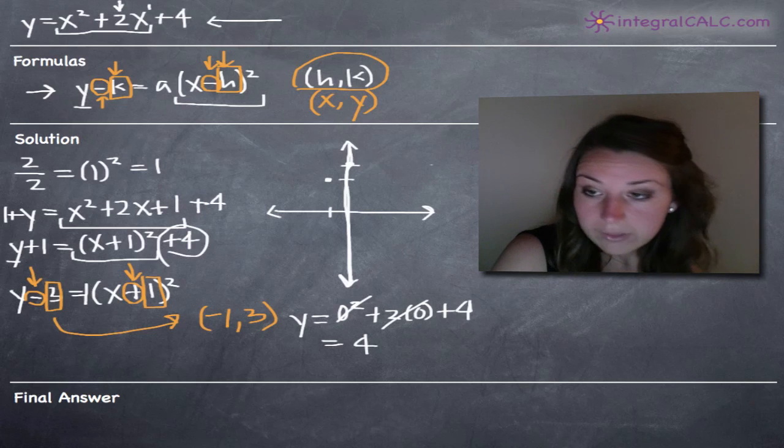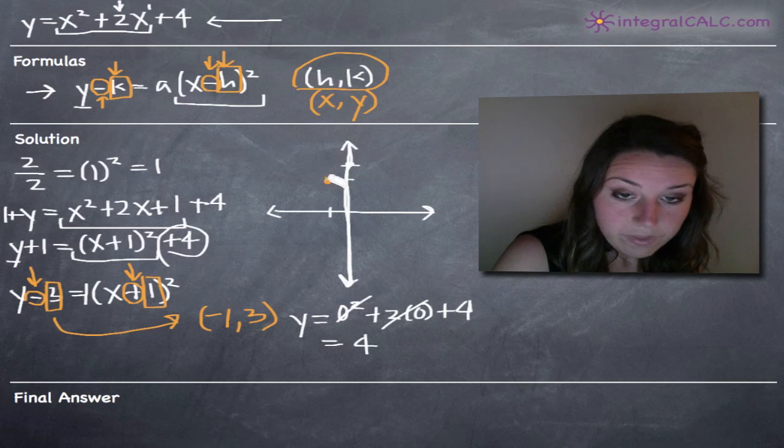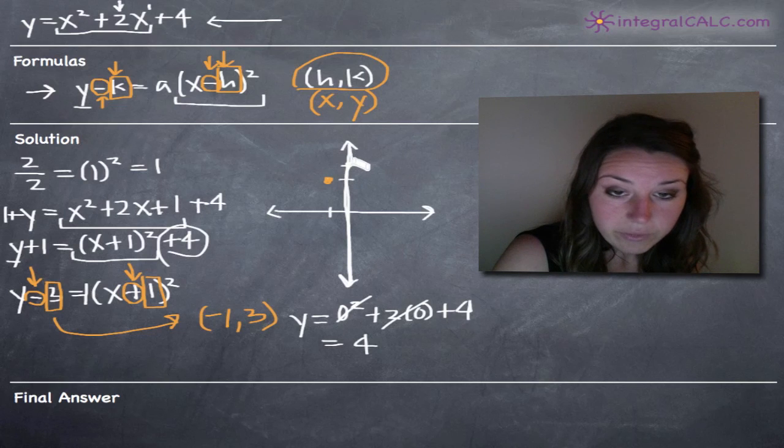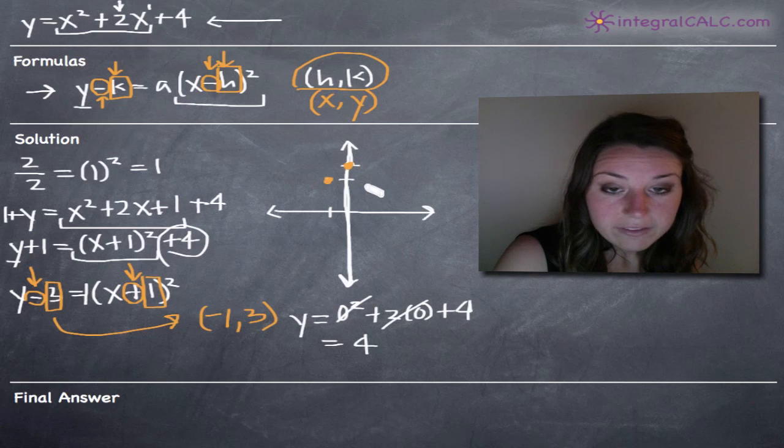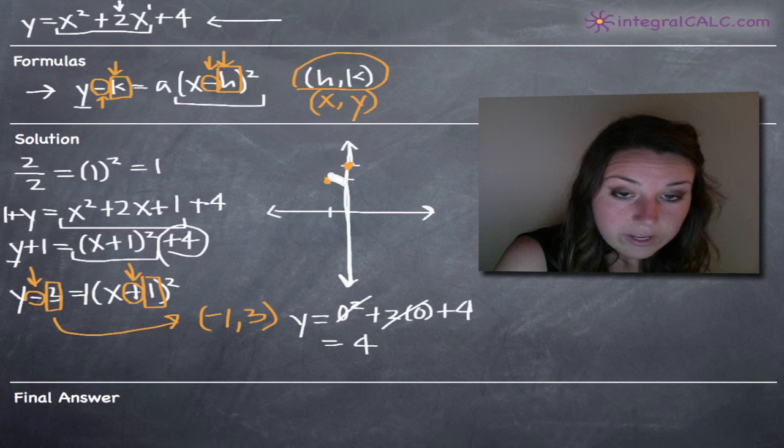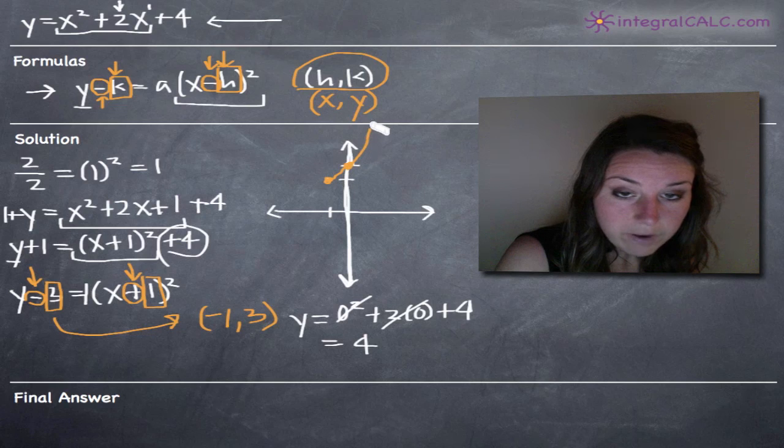So we'll plot, let me do this in orange so we can see it. Here's our vertex at negative one, three. Here's our y-intercept at zero, four.